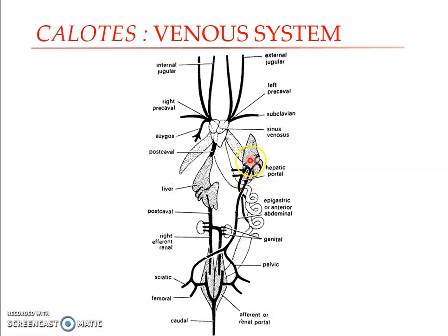The hepatic portal vein is formed by branches from the stomach and the intestine. You can see all these branches join together to form the hepatic portal vein, which enters the left lobe of the liver and also divides into many capillaries. The blood is then collected by the hepatic vein, which becomes part of the post-caval vein.